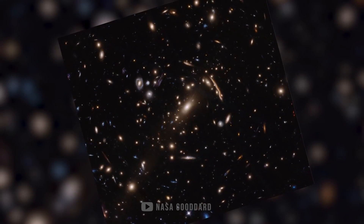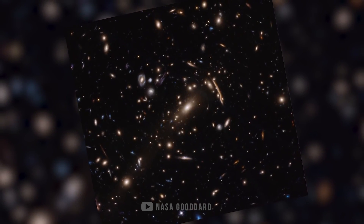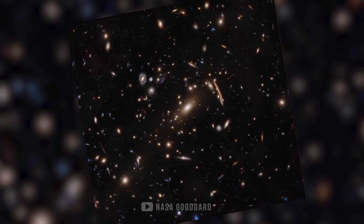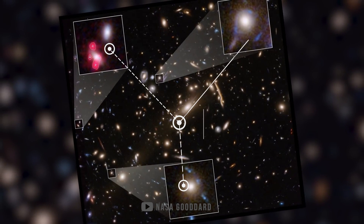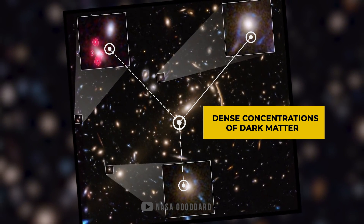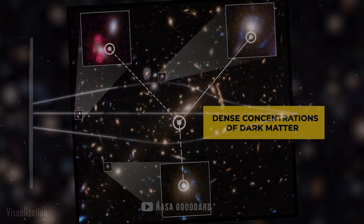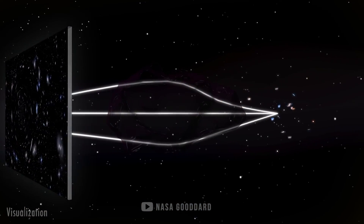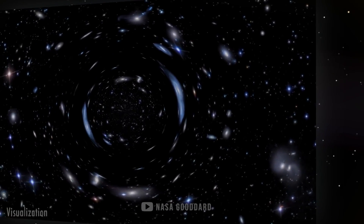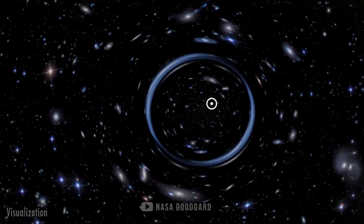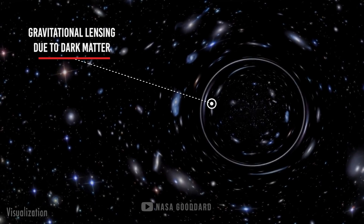Dark matter is an appropriate term because we can't seem to detect it no matter how hard we try. The matter does not seem to interact with ordinary matter, at least not in ways that we can currently detect. For example, it does not emit any light nor interact with ordinary things in any way that we can detect, except through gravity.